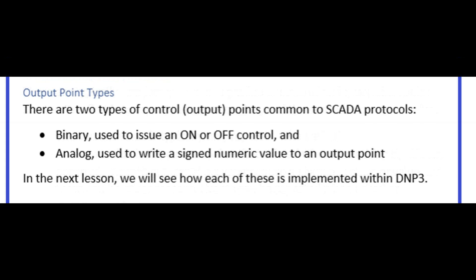There are two types of control output points common to SCADA protocols. Binary, used to issue on or off control. And analog, used to write a signed numeric value to an output point. In the next lesson, we will see how each of these is implemented within DNP3.